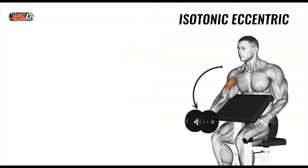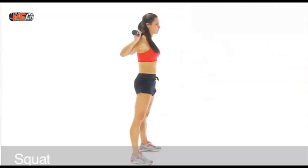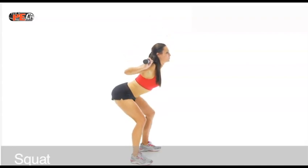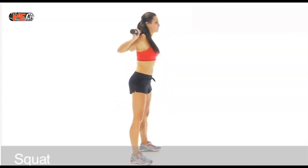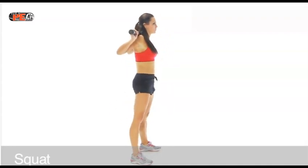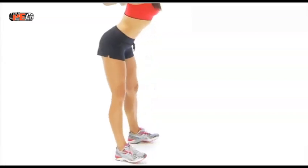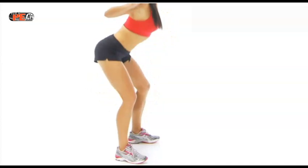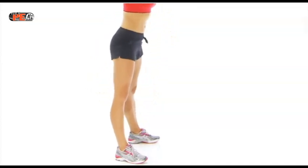Isotonic eccentric contractions occur when a muscle lengthens under tension. This occurs during the lowering phase of movements or when landing from a jump. Here, muscles act as a brake and counteract the force of gravity. During the lowering phase of a squat, the quadriceps muscle contracts eccentrically — it is lengthening, but still contracting at the same time.